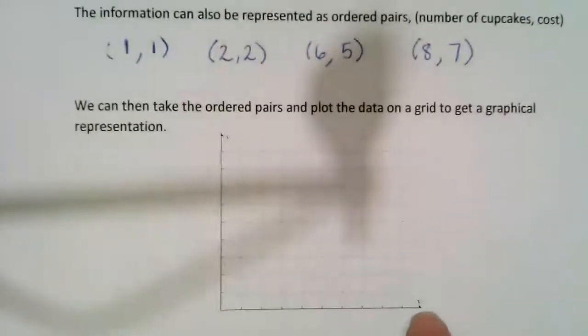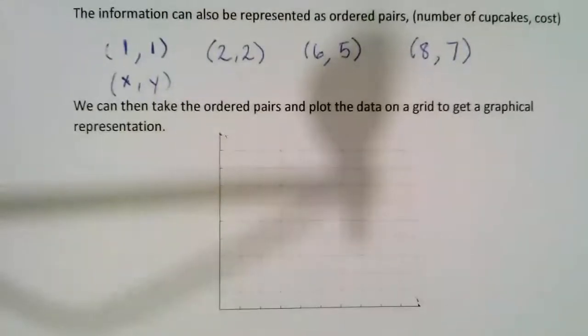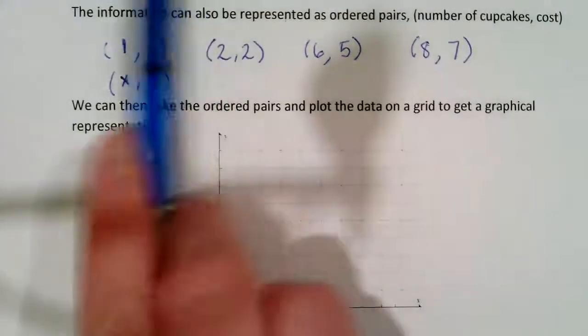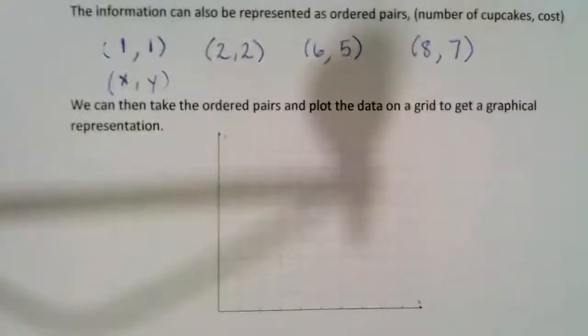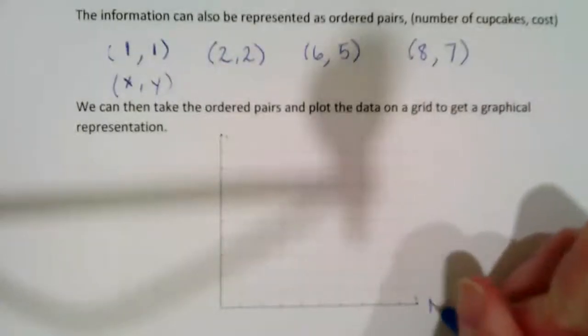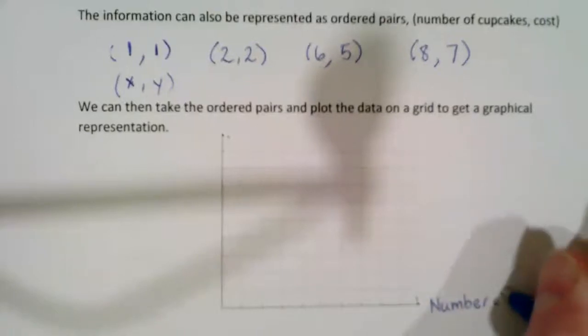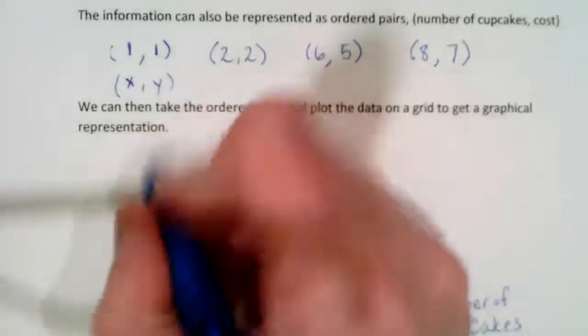The X is always the first quantity, and the second number is always Y. Now in this particular case, because we are dealing with not just numbers but numbers that represent a specific quantity, we can label this axis number of cakes. And on the vertical axis, we'll list the cost with a dollar sign.